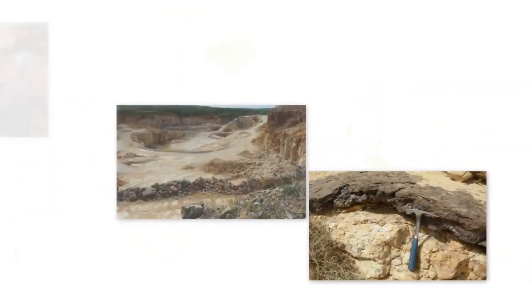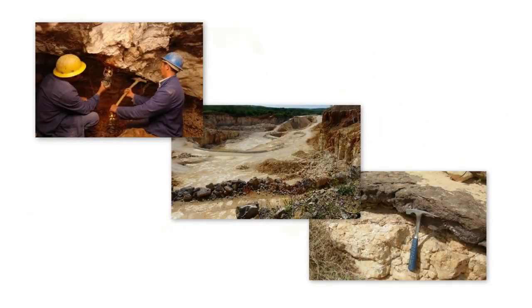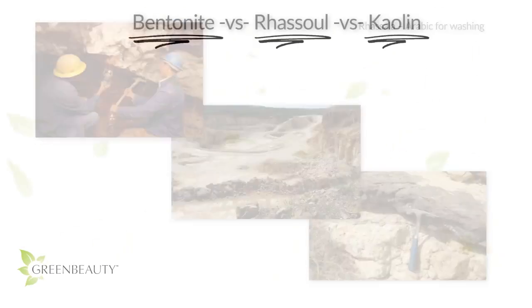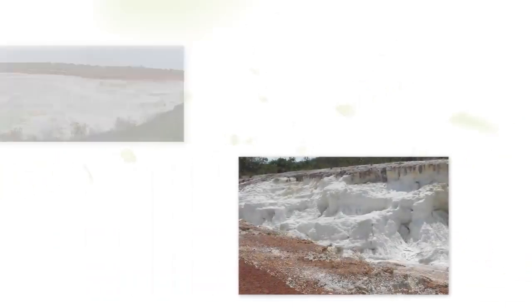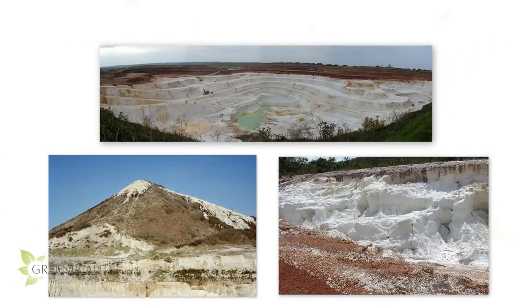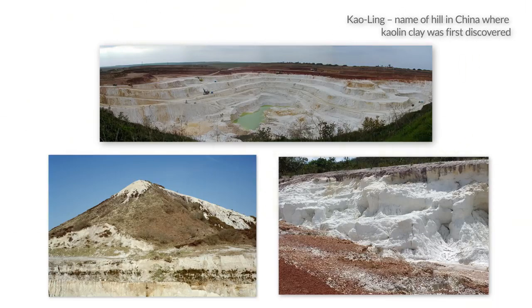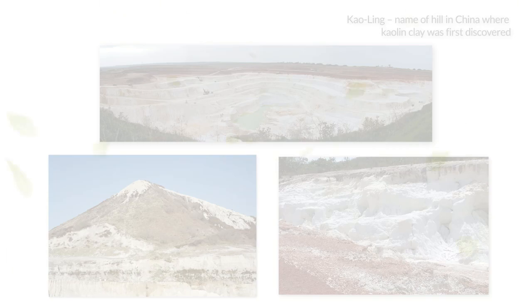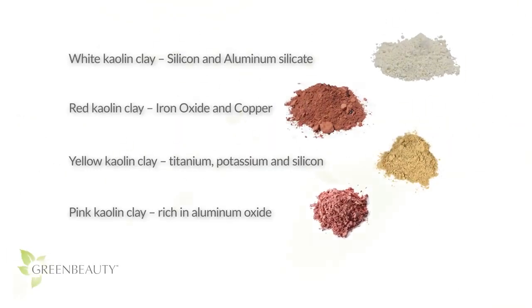Rasul clay, sometimes called ghassoul clay or Moroccan clay, is also part of the smectite group consisting mostly of montmorillonite. Like bentonite clay, rasul clay is a volcanic clay — it's mined in the Atlas Mountains of Morocco. The word rasul derives from the Arabic word for washing, 'rasala.' Kaolin clay, sometimes called china clay, white clay, or kaolinite clay, is different — it's mostly found in soil that developed from the chemical weathering of rocks in hot, moist climates. The word kaolin is derived from 'kaoling,' meaning high ridge, which is the name of the hill where the earliest samples were found.